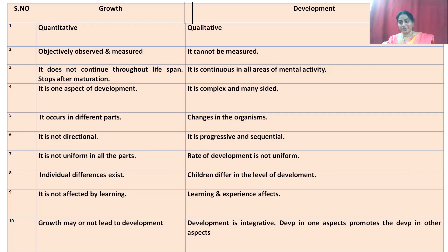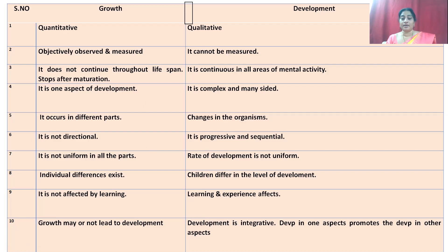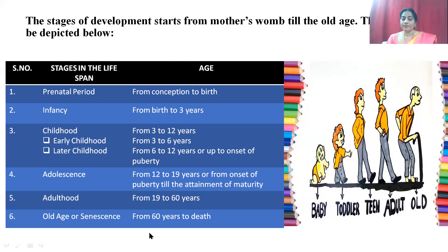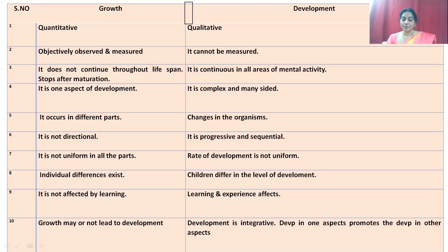Growth may not lead to development. The last and most important point is that development is integrative — development in one aspect promotes the development in another aspect. Now let us look at the different stages of development, which start from the mother's womb till old age. These stages start from the prenatal period and end with old age. The prenatal period is from conception to birth, infancy from birth to three years, childhood from three to twelve years — divided into early childhood from three to six years and later childhood from six to twelve years.